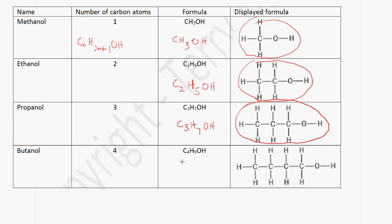In the case of butanol, we have 4 carbon atoms. So it will be C4H9OH — 2 multiplied by 4 is 8, plus 1 gives us 9. And this represents the displayed formula for butanol.